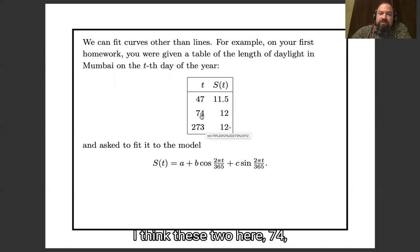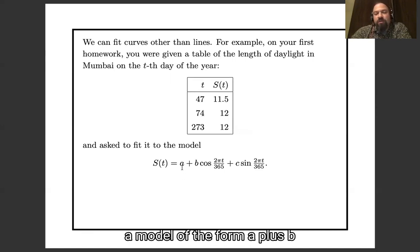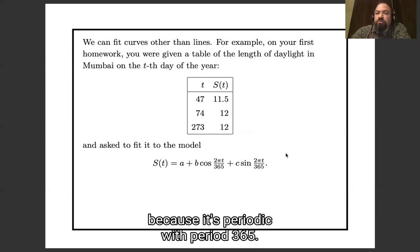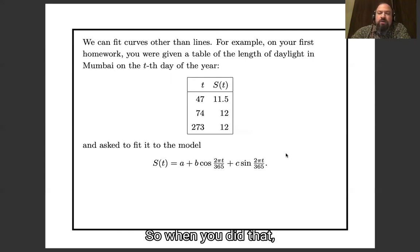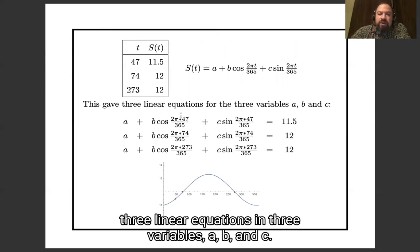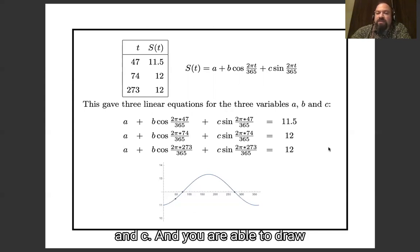I think these two here, 274 and 273, are the equinoxes. And you're asked to fit that information to a model of the form a plus b cosine 2π t over 365 plus c sine 2π t over 365. That's a sensible model to do because it's periodic with period 365. So when you did that, you got a system of three linear equations in the three variables a, b, and c, and you solved those linear equations to find the values of a, b, and c.